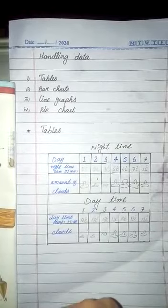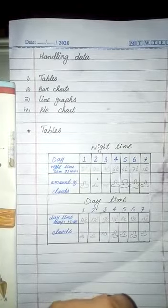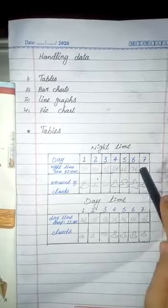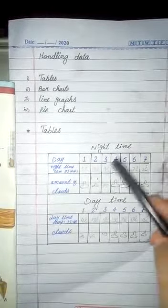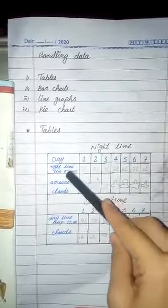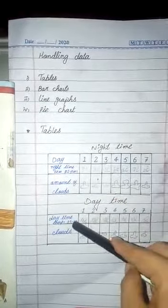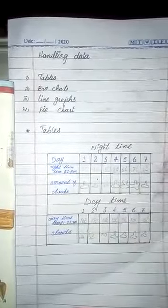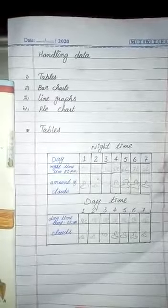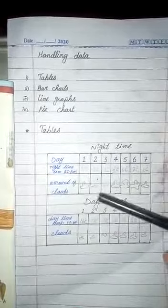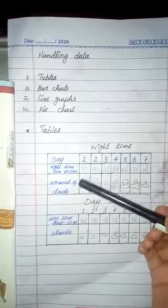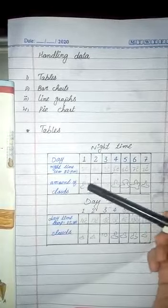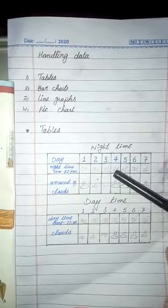This is a weather chart. Suppose we observe weather at a specific area — we noted temperature at night at 11 p.m. and at daytime at 11 a.m. On the first night, we calculate temperature which is 2 degrees centigrade and there is a large amount of clouds.